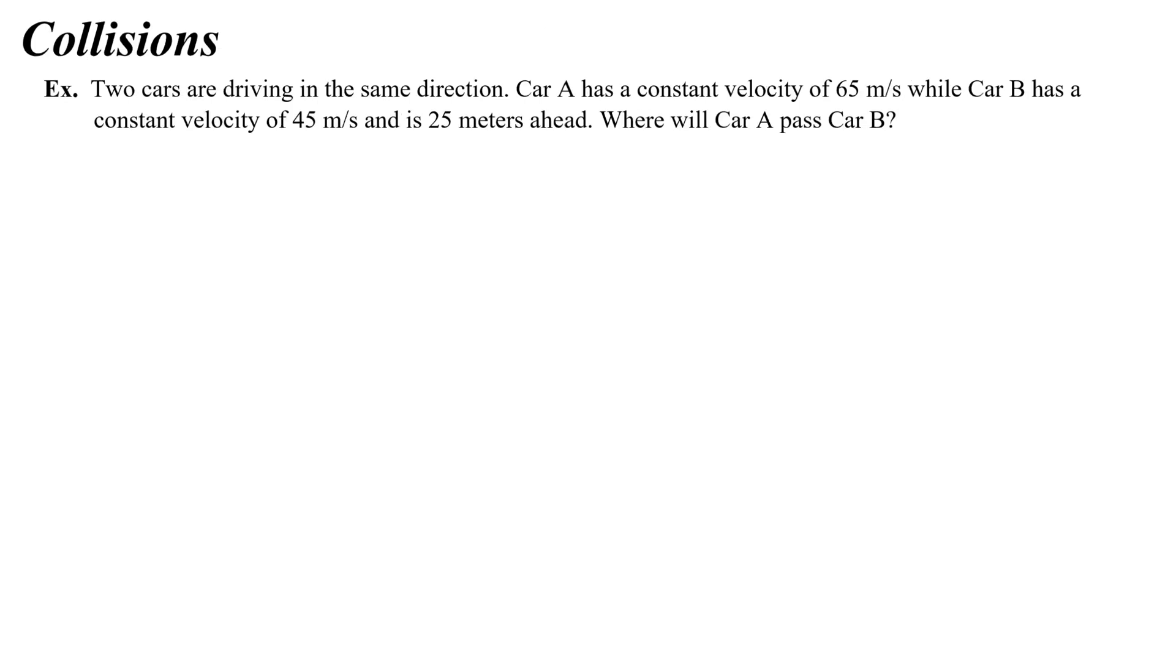So here is a problem where two objects are moving with constant velocity. And we're going to use this graphability of our equations to answer this problem. Two cars are driving in the same direction, car A has a constant velocity of 65 meters a second, while car B has a constant velocity of 45 meters per second and is 25 meters ahead. Where will car A pass car B?